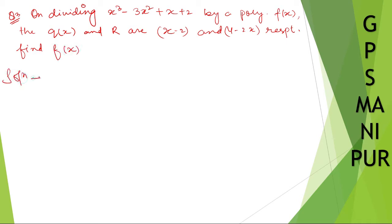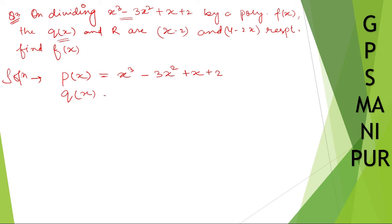Solution. So we have p(x) equal to x cubed minus 3x squared plus x plus 2. q(x), that is the quotient, is x minus 2. The remainder r is 4 minus 2x. What we need to find is polynomial f(x).